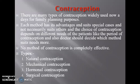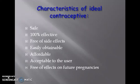Let's look at the types of family planning. We have natural contraception, we have mechanical contraception, we have hormonal contraception, and we have surgical contraception.